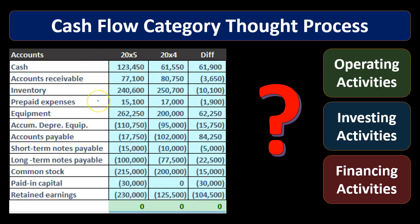So we've got cash, accounts receivable, inventory, prepaid expenses. What we're going to do is take the change in cash — that's going to be the end result on our statement of cash flows — and we're going to back into that end result by looking at the change in the other balance sheet accounts and try to figure out what's causing this change. We're going to go through all the other balance sheet accounts, look through these changes, and we know that if we add them all up they add up to zero, because the debits and credits for one year add up to zero and so do the other year's. So we know that if we add up everything except cash, the result will be the difference in cash.